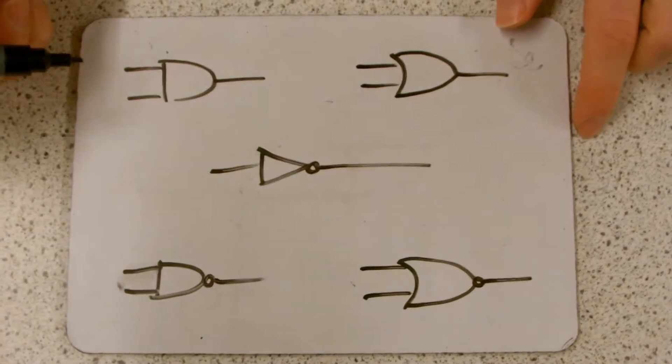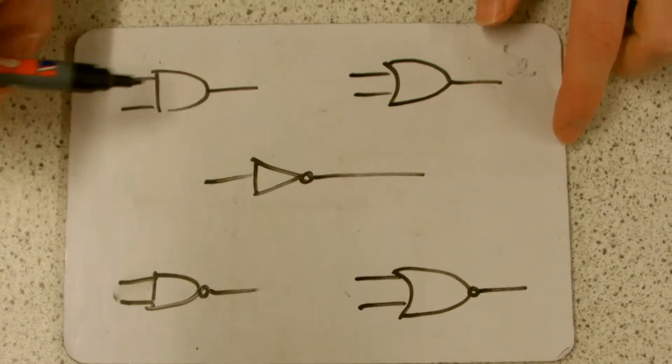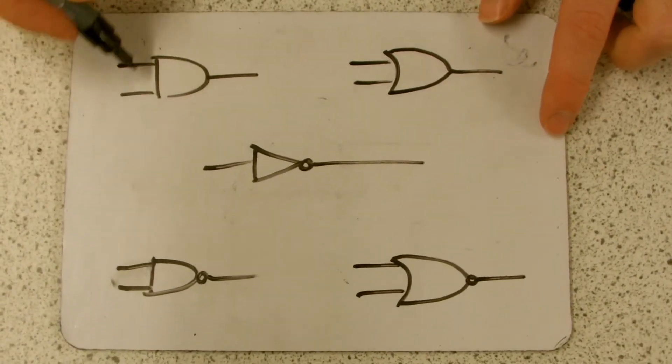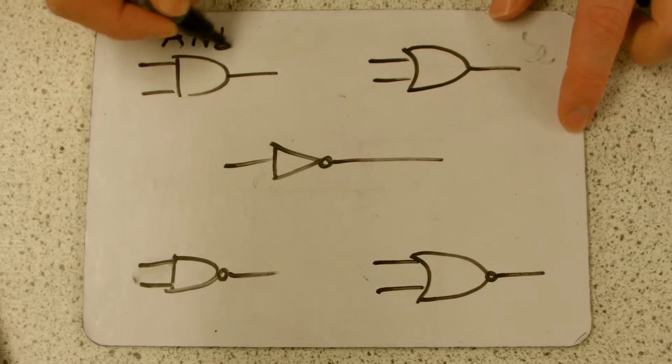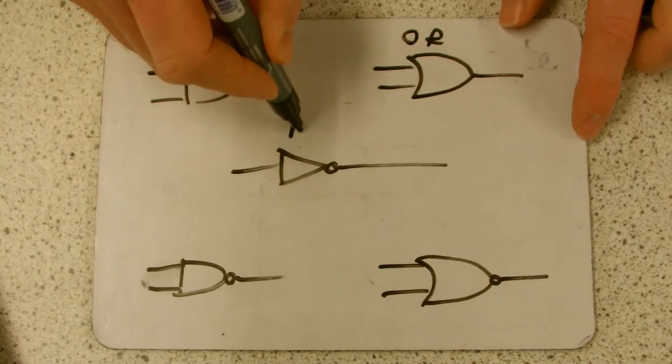So you have to remember the symbols, because you're not always going to get told what they are. You're just going to be given a circuit diagram. This one is the first one we did, this is the AND gate. This is the OR gate. This is the NOT gate.